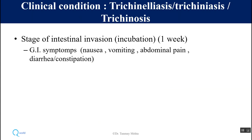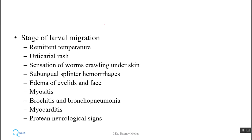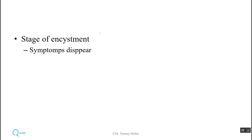This parasite causes a clinical condition known as trichinellosis, also known as trichiniasis or trichinosis. It causes gastrointestinal disturbance consisting of nausea, vomiting, abdominal pain, diarrhea, and sometimes constipation. The incubation period is approximately one week. However, the phase we are more worried about is larval migration, because larvae entering the circulatory system may cause allergic symptoms like urticarial rash, hemorrhages, edema, myositis, sometimes involvement of the lungs causing bronchopneumonia, myocarditis, and neurological signs. As larvae get encysted in skeletal muscle, symptoms disappear.